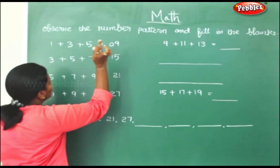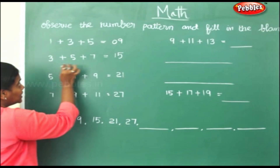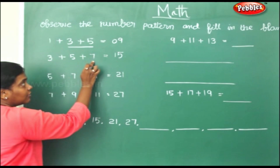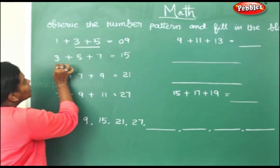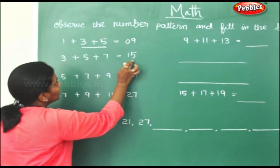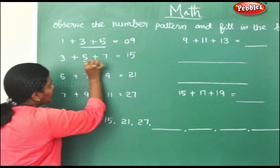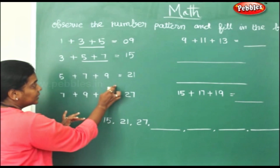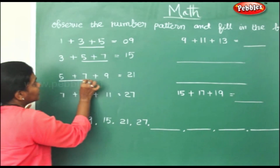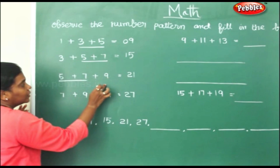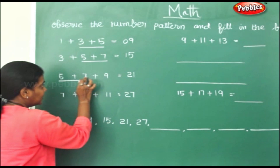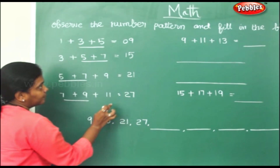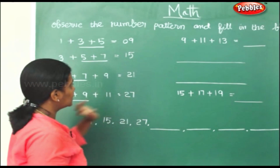Starting with 1, 3, 5, 9. Next, they have taken these two numbers: 3 and 5, plus the next odd number 7. So you sum up these and you will get 15. Then for the next sum, they have taken 5 and 7 plus the next odd number.